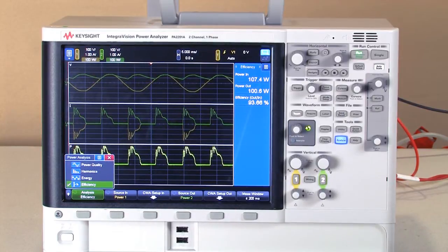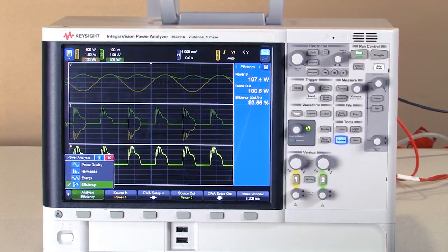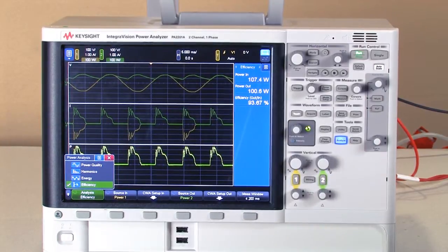That pulls up my push button efficiency panel. And you can see that I have 107 watts of input power and the output is 100 watts for a total efficiency of 93.66%.